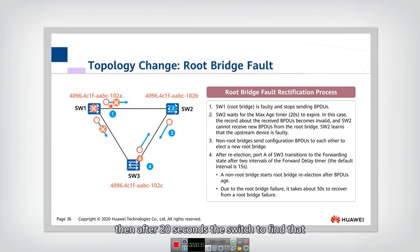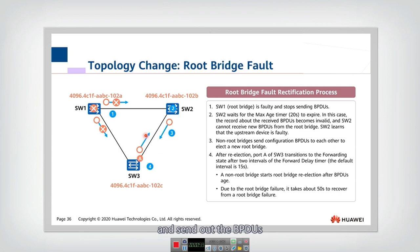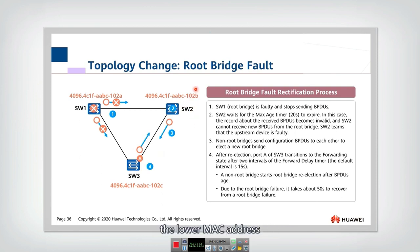After 20 seconds, switch 2 finds that its upstream device is broken, and switch 3 also finds that its upstream bridge is gone. These switches may select themselves as the root switch and send out BPDUs. After exchanging BPDUs, they find that switch 2 has the lower MAC address, so switch 2 is selected as the root switch.